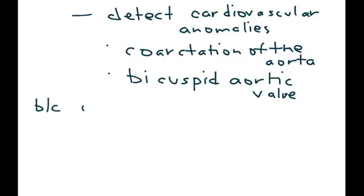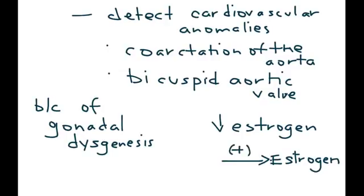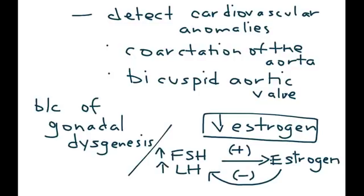Gonadal dysgenesis is very important because it will result in low estrogen levels. Estrogen levels are increased by two hormones: FSH and LH. If estrogen levels are low, the negative feedback that normally happens will not occur. As a result, FSH and LH levels will rise, and that is a finding also in Turner Syndrome.